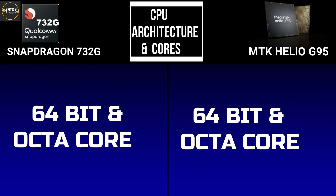The next category is CPU architecture and cores. Both the Snapdragon 732G and the Mediatek Helio G95 are 64-bit and octa-core, which helps with task distribution and multitasking.